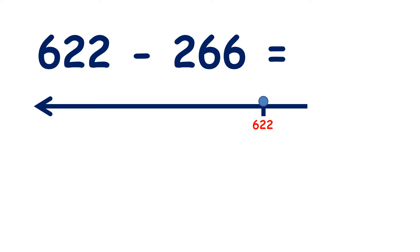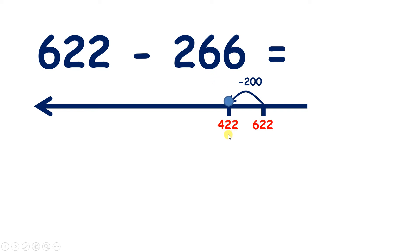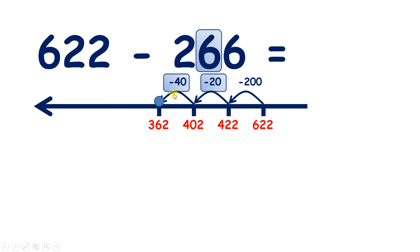Now pause the video and see if you can subtract 266 from 622. So we can start by subtracting our 2 hundreds, which gives us 422. Now we can subtract 6 tens, but rather than subtracting 6 tens all in one go, we can subtract our 2 tens to give us 402, and now we need to subtract 4 more tens, which leaves us with 362. So we subtracted 20, then subtracted 40, giving us 60 altogether.